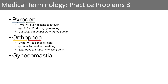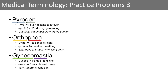The next word we're going to look at is gynecomastia. Gyneco — you can think of gynecology — gyneco means female or woman or something relating to feminine. And mast means breast or breast tissue; we can think of a mastectomy. And ia means abnormal condition. So it's an abnormal condition of feminine or female breast tissue. Really, gynecomastia means an abnormally large breast in men — it's a condition in men where they have abnormally large breast tissue.